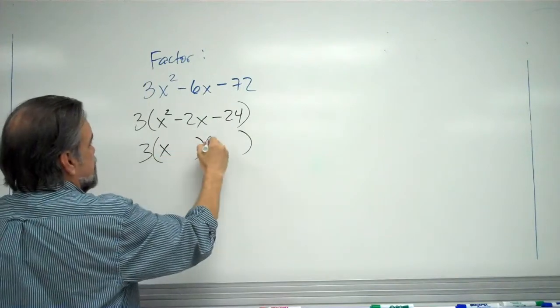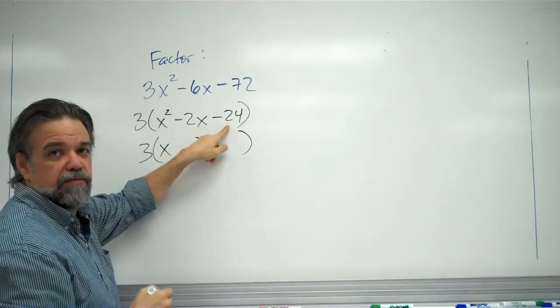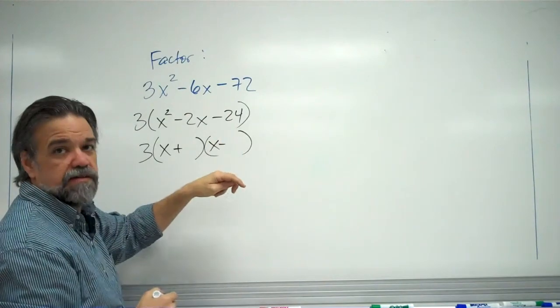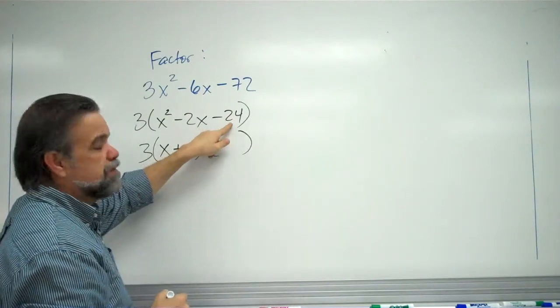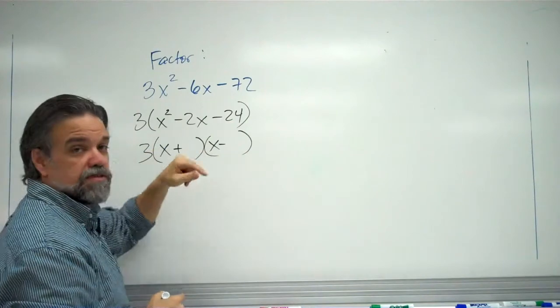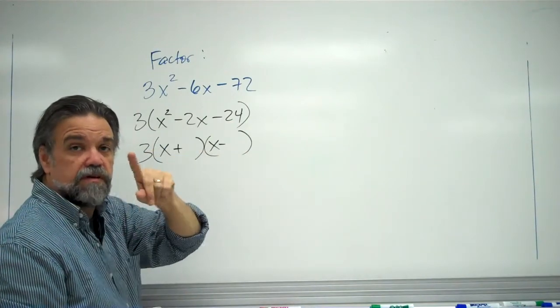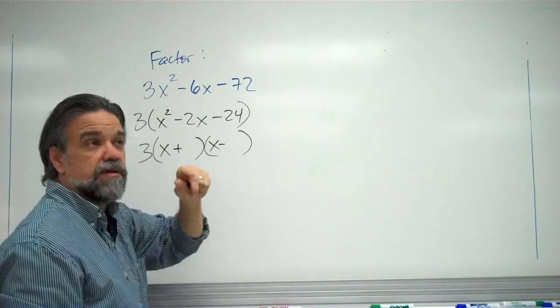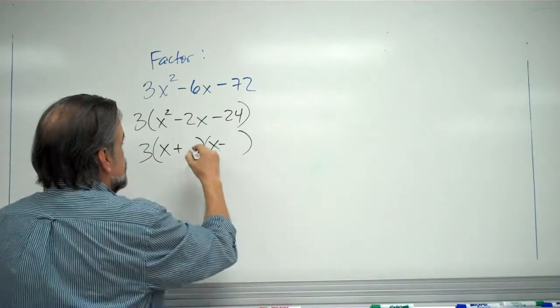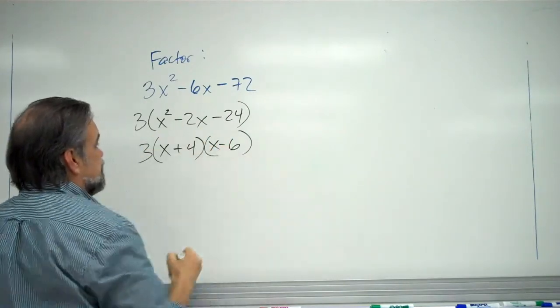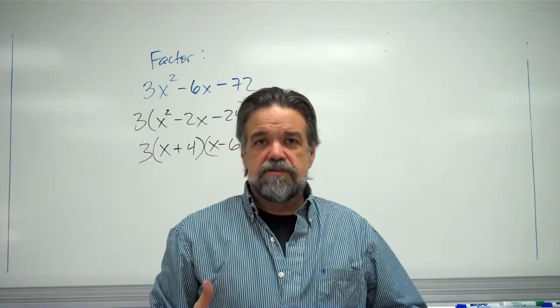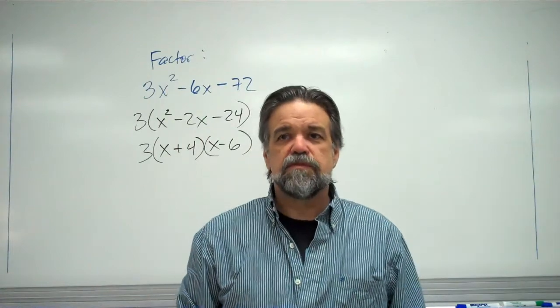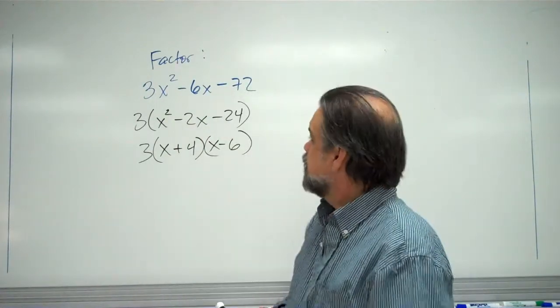Let's see. This is going to be x and x. I've got a negative product, which means I'm going to have one positive and one negative term. And this time, I want two numbers that multiply together to be 24 whose difference is 2. That's going to be 6 and 4. I want them to add up to negative 2. So, that's going to be negative 6 plus positive 4. So, x plus 4, x minus 6. I apologize. I probably insulted your intelligence by giving you such an easy problem. Please forgive me.